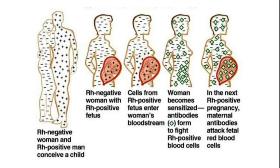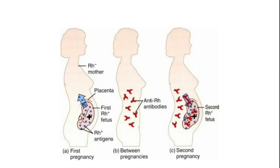When a negative blood group woman and a positive blood group man conceive a child, if the woman is carrying a positive blood group fetus, cells from the positive blood group fetus enter into the woman's bloodstream. The woman's body becomes sensitized and starts producing antibodies against those positive antigens present in the child. In her second pregnancy, if she is again carrying a positive blood group child, the already produced antibodies in the mother's body will enter the child's body and start attacking the child's antigens, destructing the RBC and leading to hemolytic anemia. This is a very dangerous condition.